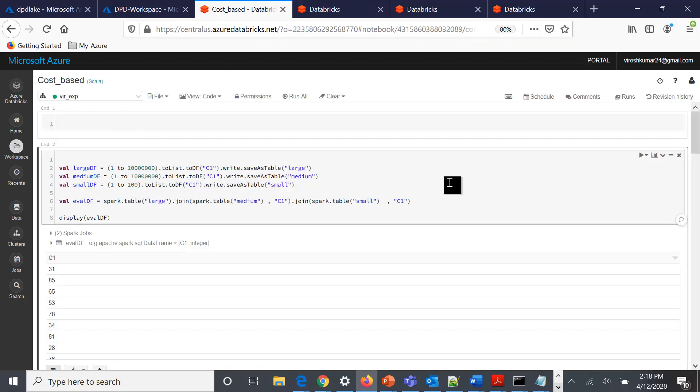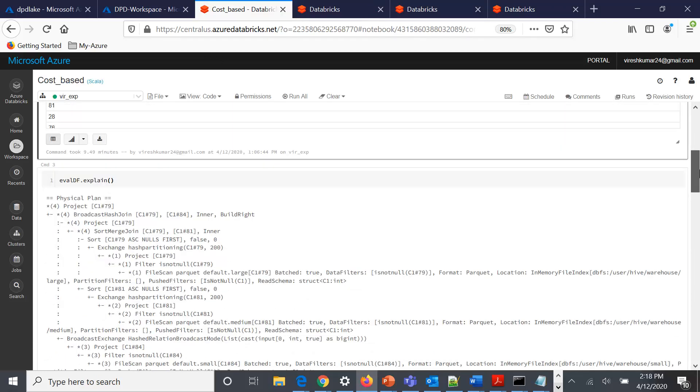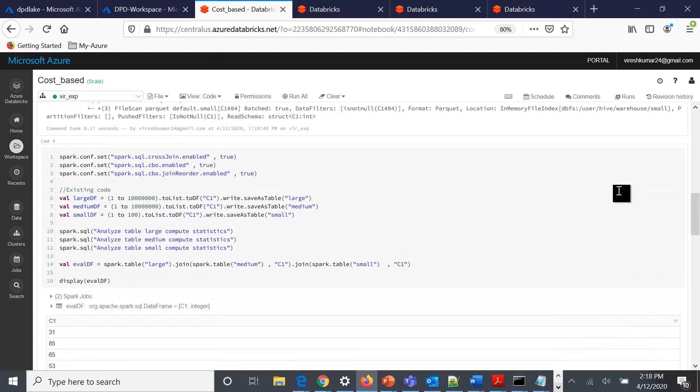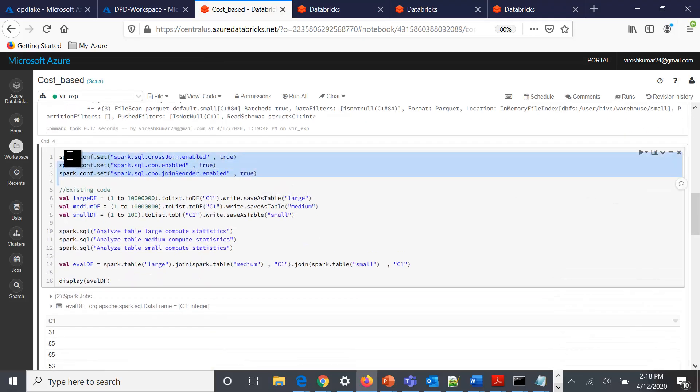Now if we try to add the cost-based optimization on the same example, we have done the CBO enabled as true, we also done the CBO join reorder as true, and then we have submitted some commands to calculate the statistics of these tables involved in this particular join so that the system can use these statistics to produce an optimized version of the physical plan.